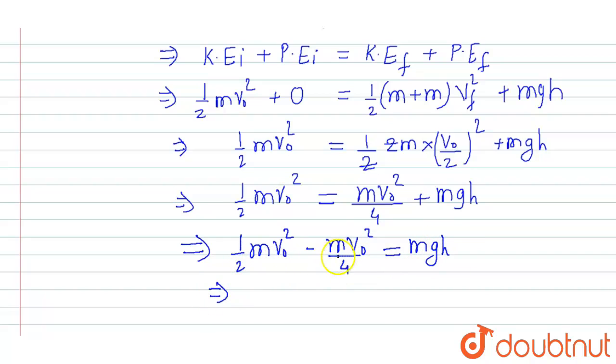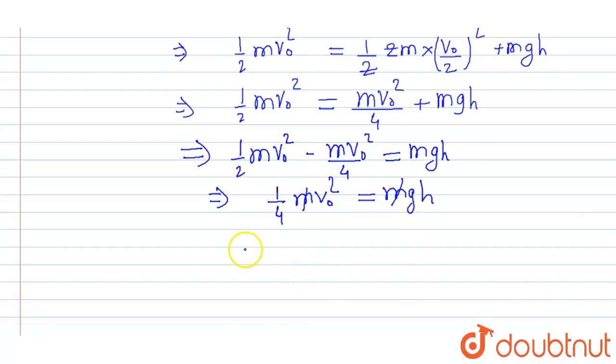Half m v naught square minus m v naught square by 4 will become 1 by 4 m v naught square. Now cancelling M, I can say h equal to v naught square upon 4g.